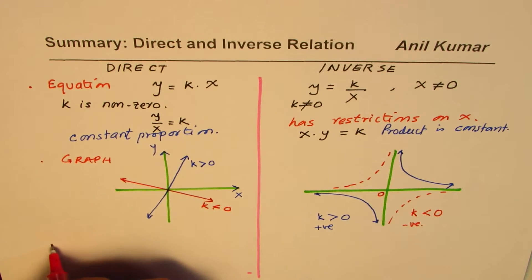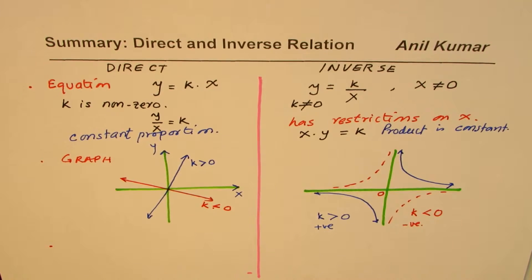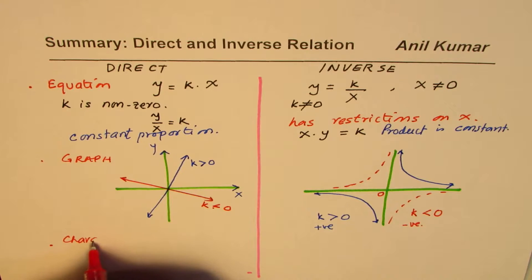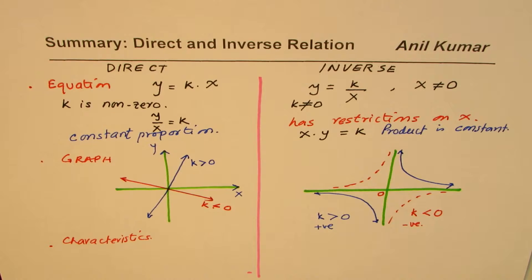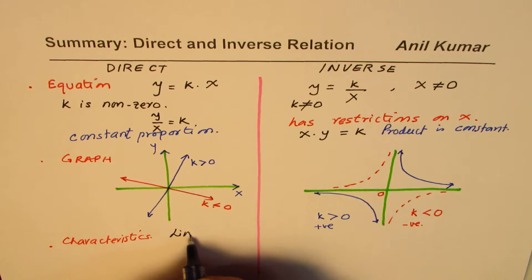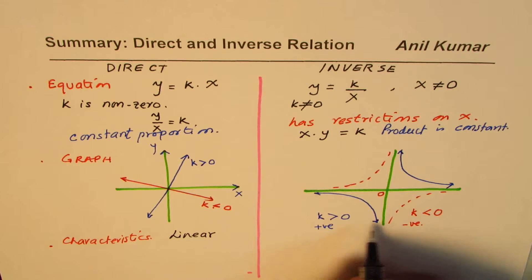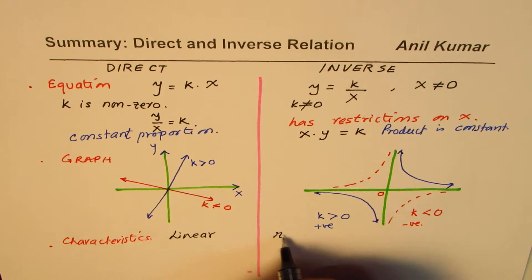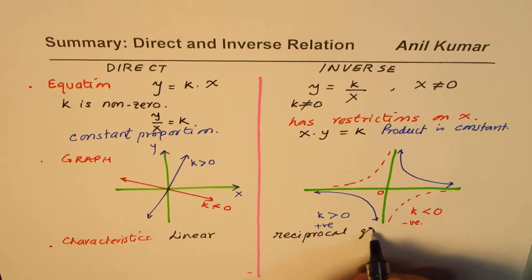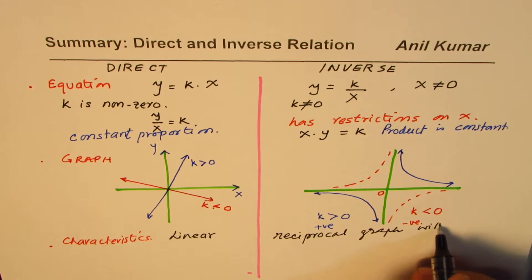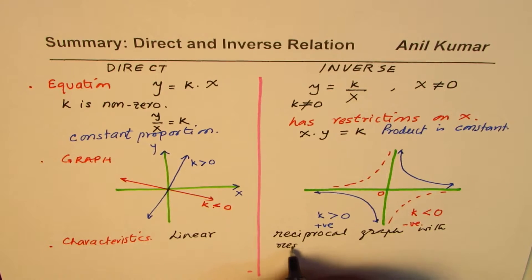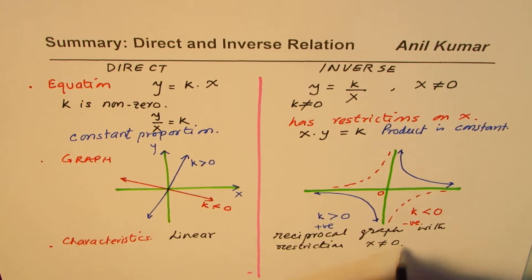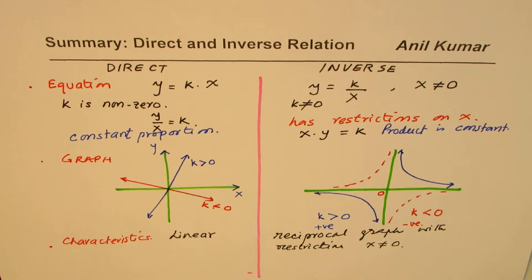So the graph of a direct relation is linear, while the graph of an inverse relation is a reciprocal curve with the restriction that x is never equal to zero. These curves approach the x-axis and y-axis but never touch them, so there are no x or y intercepts in inverse relation.